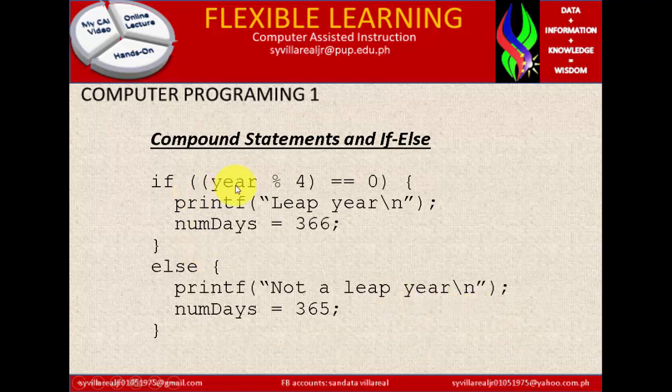If function with year percent 4 divided by 4 getting its remainder, and that is what you called modulo, is equal to zero. Begin, printf, it will display on the screen, leap year, then numdays is equal to 366.